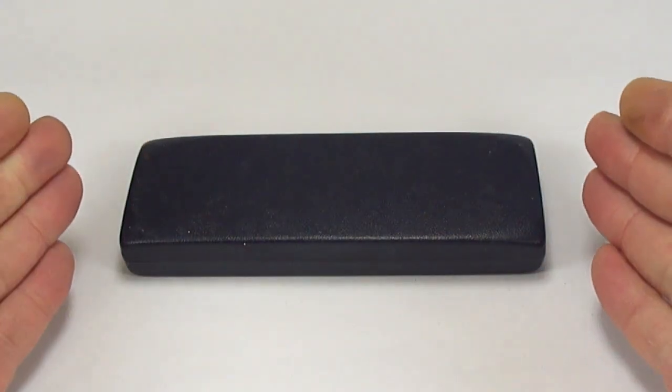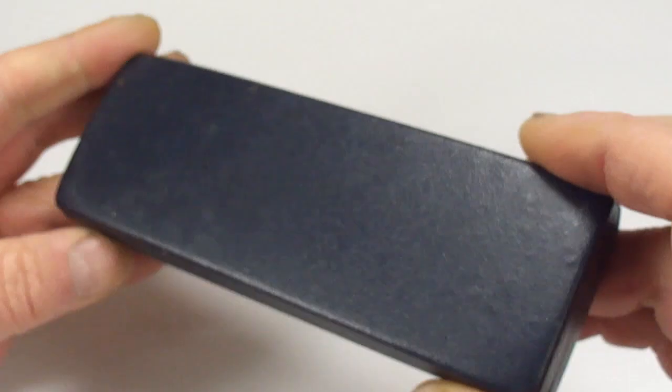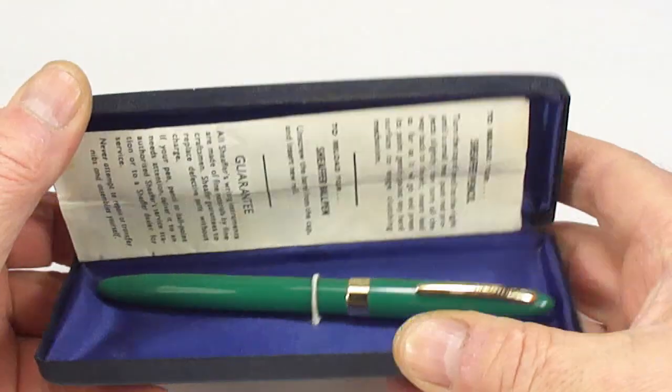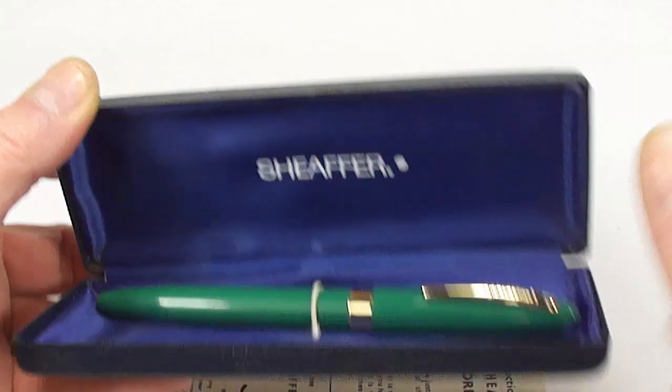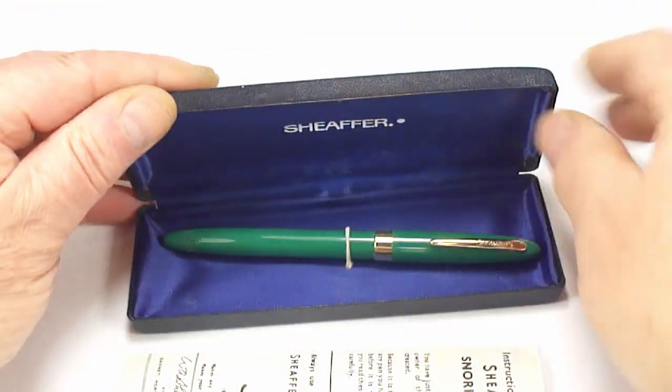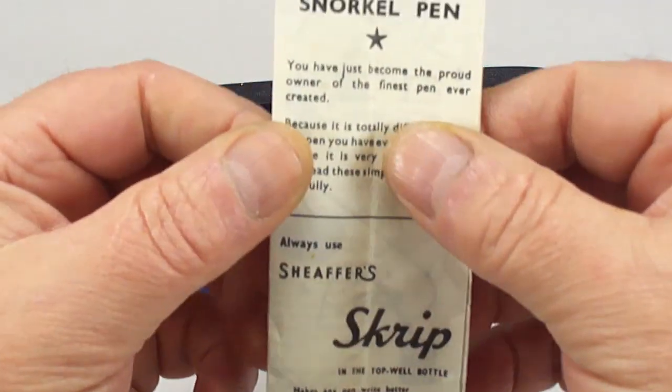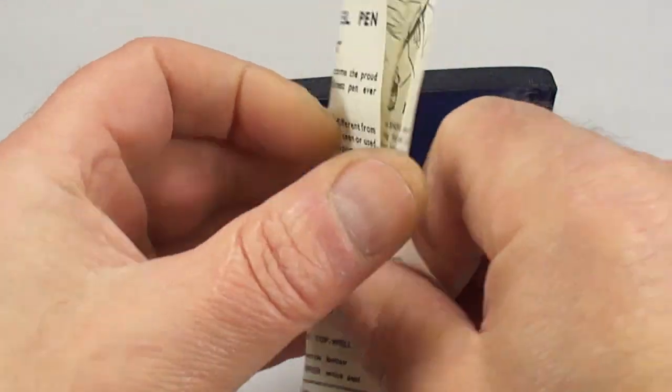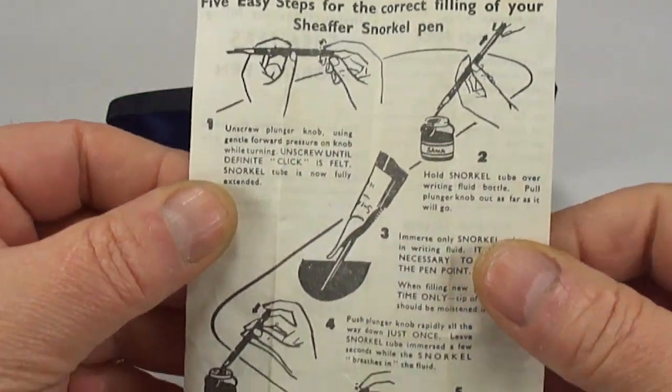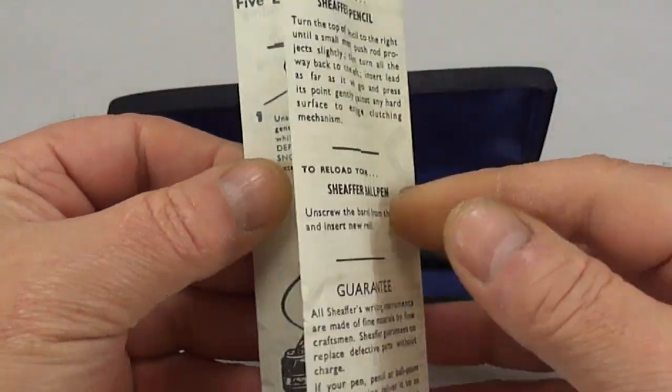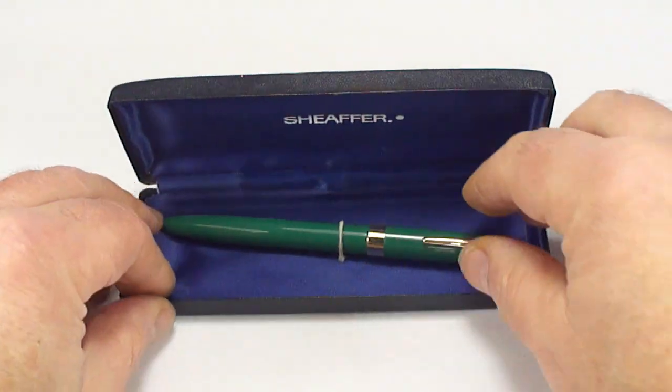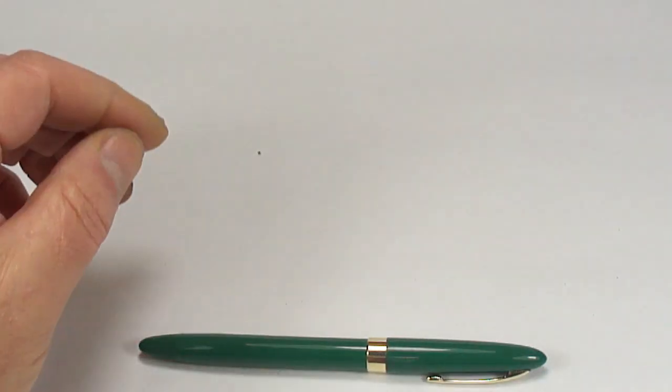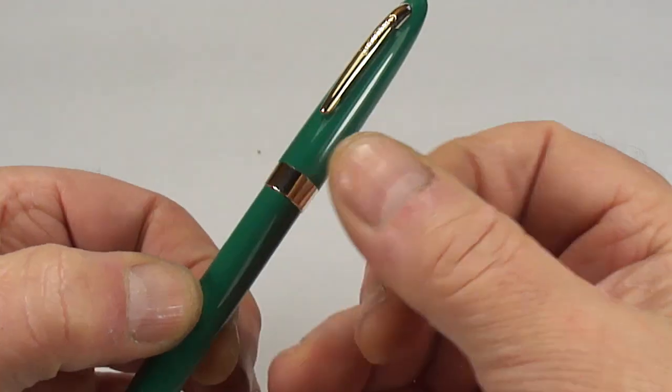And voila, all done. As you can see, comes in the original Schaefer case. If we open it up, there you go. Schaefer's to the back, we've got the original instructions Schaefer snorkel pen. If we open that up, there you go, gives you the instructions on how to fill your Schaefer fountain pen. Let's take the pen out of the case, pop that to one side, and there we have it.